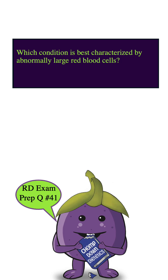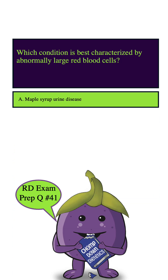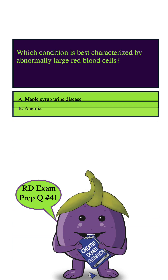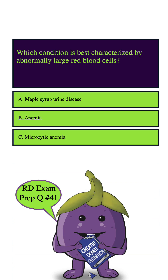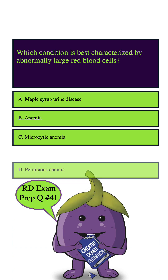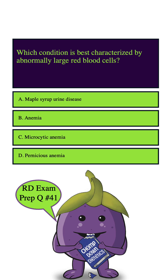Which condition is best characterized by abnormally large red blood cells? A. Maple syrup urine disease, B. Anemia, C. Microcytic anemia, D. Pernicious anemia. Let's highlight our key words: condition, best characterized, and abnormally large red blood cells.